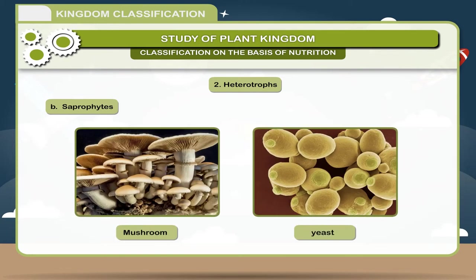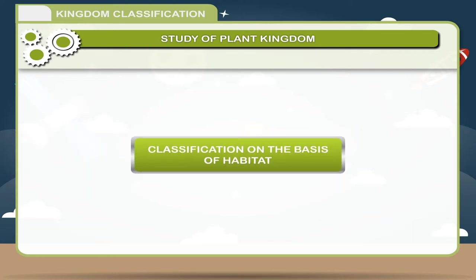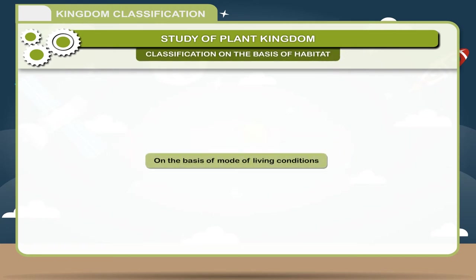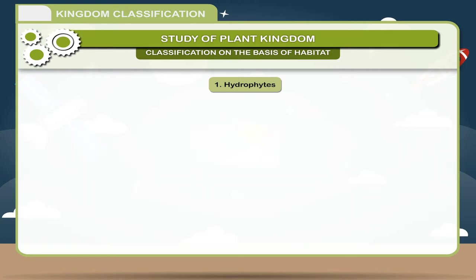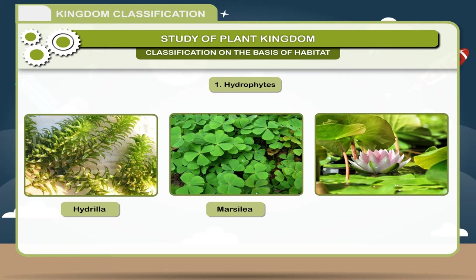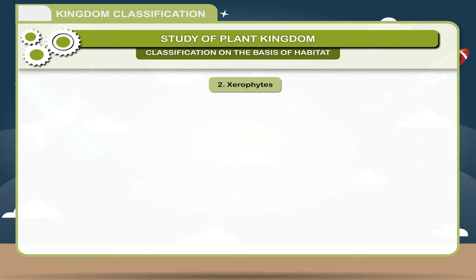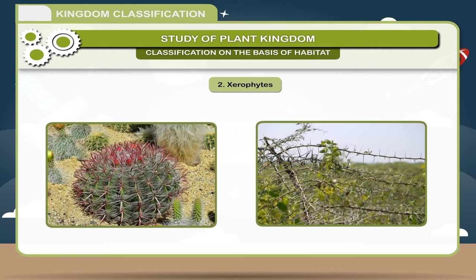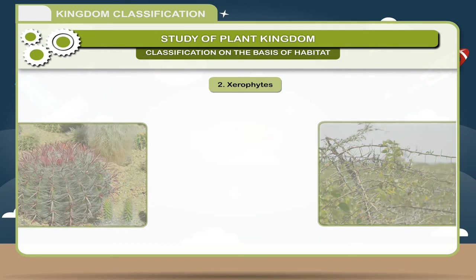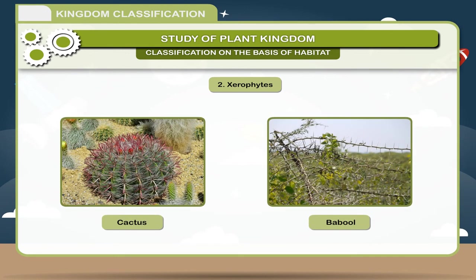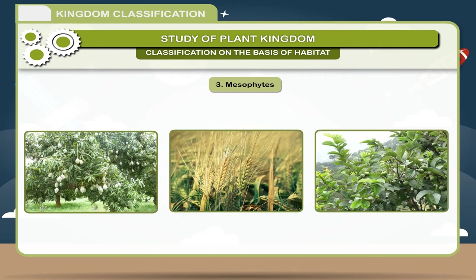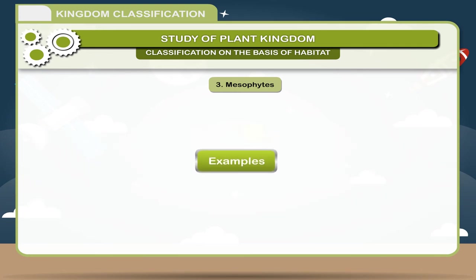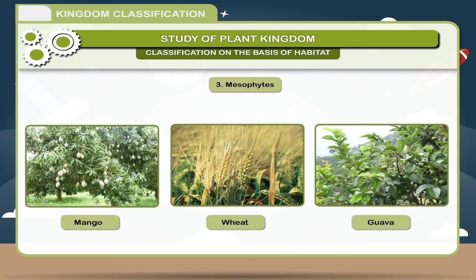Examples of saprophytes include Mushroom and Yeast. Classification on the basis of habitat: 1. Hydrophytes — plants which live in water; examples include Hydrilla, Marsilia, Lotus. 2. Xerophytes — plants which live in dry and desert climate; examples include Cactus, Babool. 3. Mesophytes — plants which need a moderate amount of moisture for growth; examples include Mango, Wheat, and Guava.